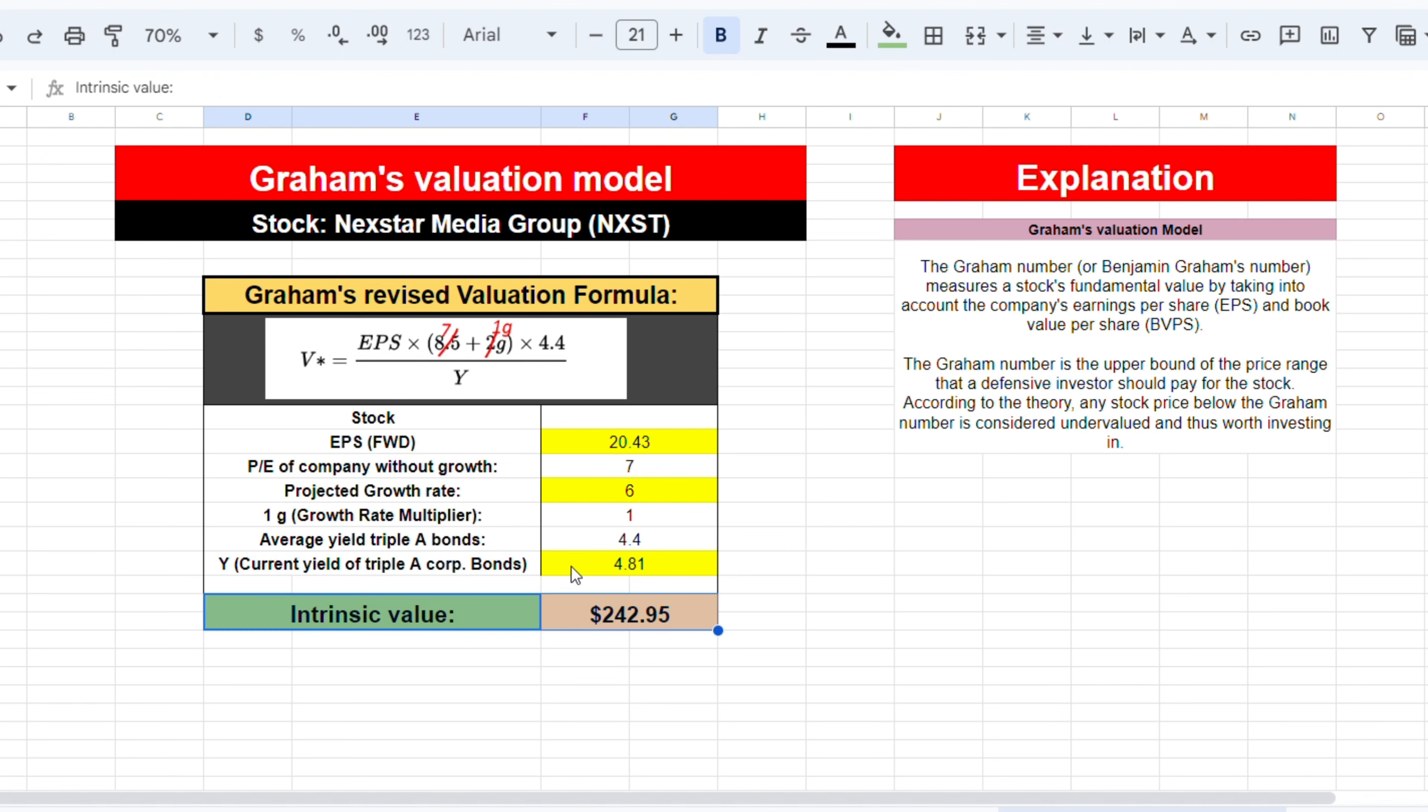Like I said, this model is very market reliant. When we would evaluate the Nexstar Media Group using this model say in 2020, the yield would only be 1.4%. When we plug that into this formula, the value would change a lot, to $834.